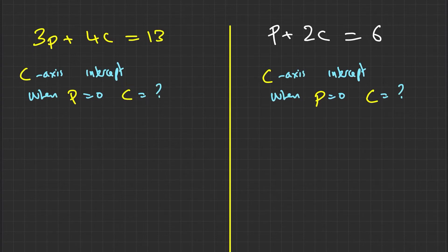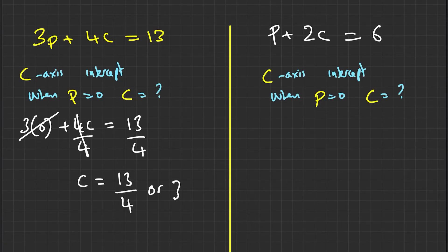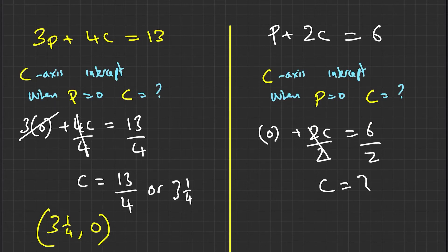What we're going to do is we're going to substitute the value of p is equal to 0. So 3 times 0 plus 4c is equal to 13. Anything times 0 is 0. So we get 4c is equal to 13. If we divide both sides by 4, the 4 cancels out on the left-hand side, which means c is equal to 13 over 4 or 3 and 1 quarter. So we have the coordinate then that when we have 3 and 1 quarter, we should get the value of 0. And for the second equation, when p is equal to 0, we have 2c is equal to 6. If we divide both sides by 2, we get c is equal to 3. 3 comma 0.